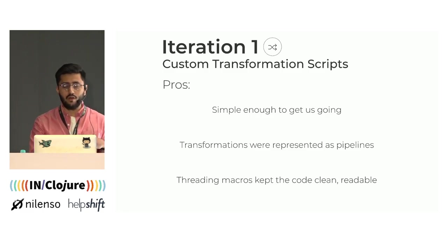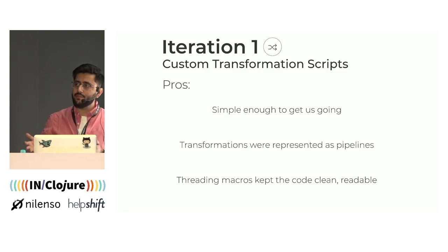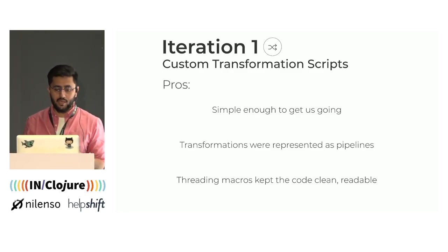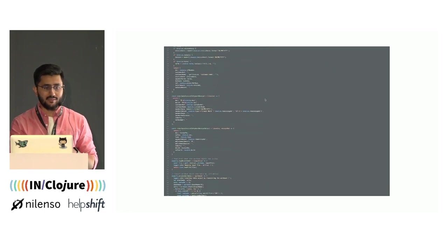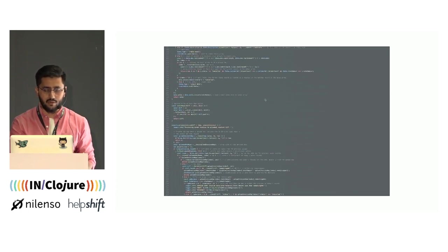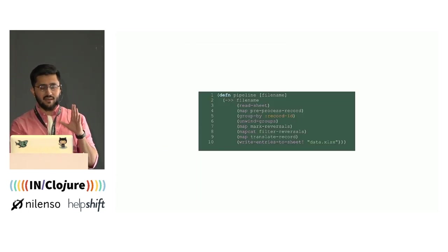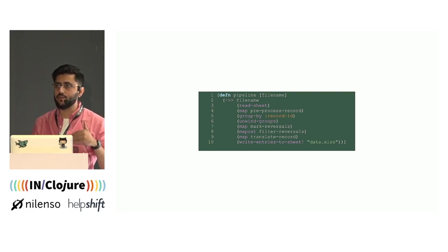When evaluating our POC in Clojure, we found that the first iteration needed to be simple, so we just wrote custom transformation scripts for each company we were trying to onboard. This naive version right off the bat gave us some decent benefits. We represented the transformations as linear pipelines using threading macros, which kept the code clean and readable. So we actually went from something that looked like an imperatively written Node.js script to something that structurally gave you an idea about the transformations going on from just a tiny snippet.